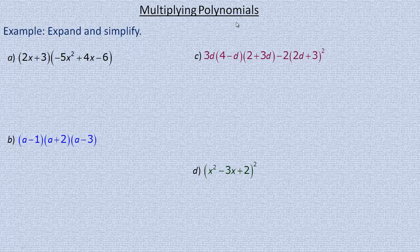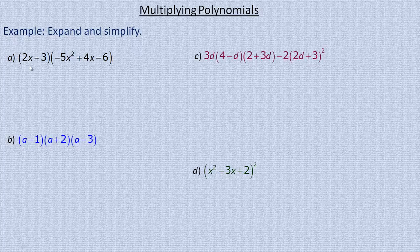In this tutorial we're going to take a look at some examples of multiplying polynomials together. I've got four examples here, showing several different kinds of scenarios: multiplying two binomials together, three binomials, or other polynomials together. The first one we're multiplying is this binomial by this trinomial. The idea, no matter how big or small they are, is to multiply every term in one by every term in the other.